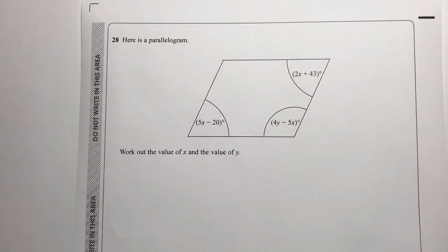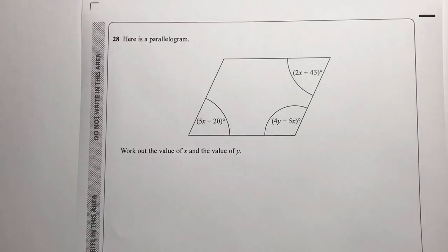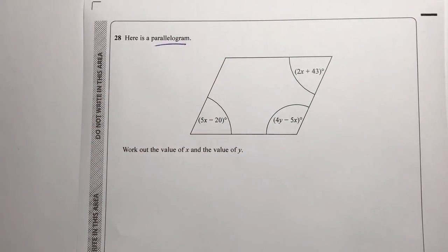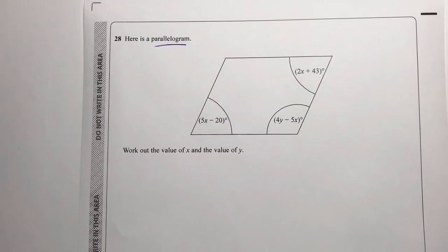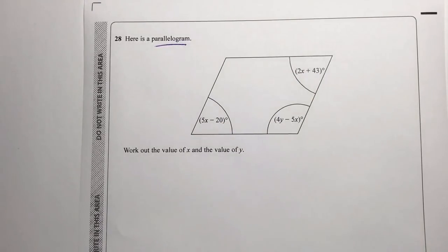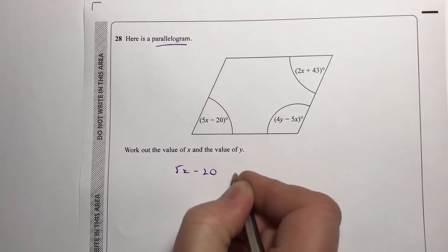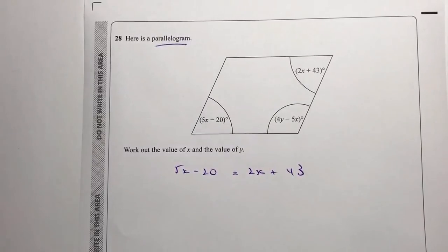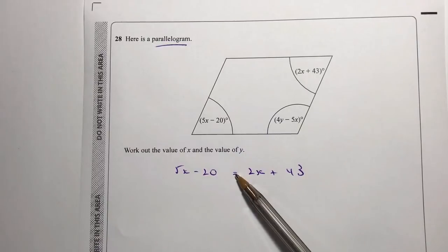Question 28 asks us to work out the values of x and y in a parallelogram. The important thing with a parallelogram is you need to recognize some of its properties. In this particular case, this angle is equal to this angle, so what we're basically saying is 5x minus 20 equals 2x plus 43. It's just a case of solving and working out the value of x, making sure we balance around the equal sign.